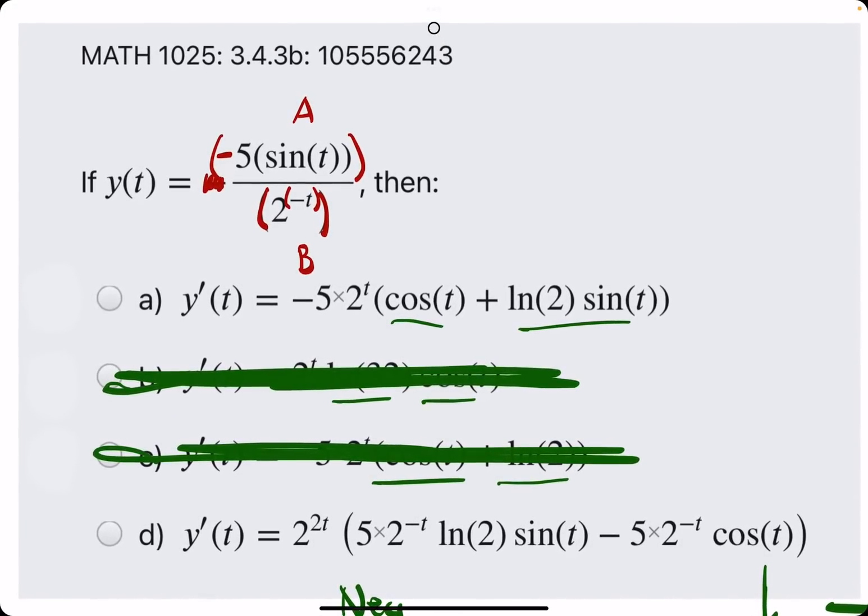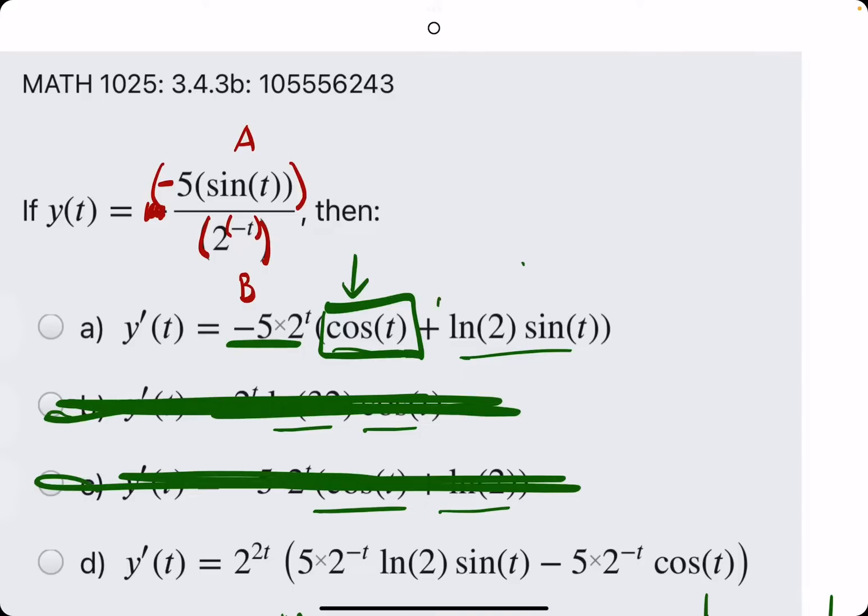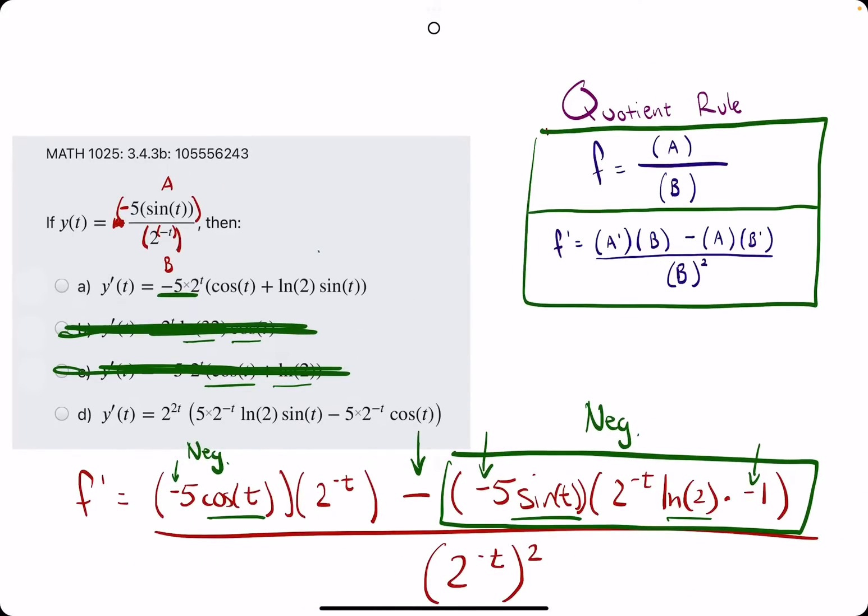In option A, it looks like they factored out a negative, and now both these terms, cosine and ln of 2 sine of t, are positive. So they're the same sign is what I'm getting at.